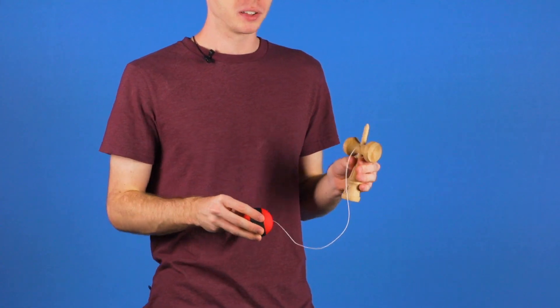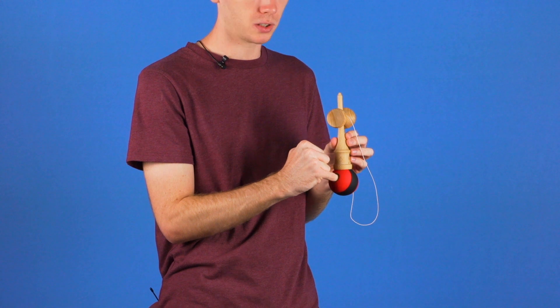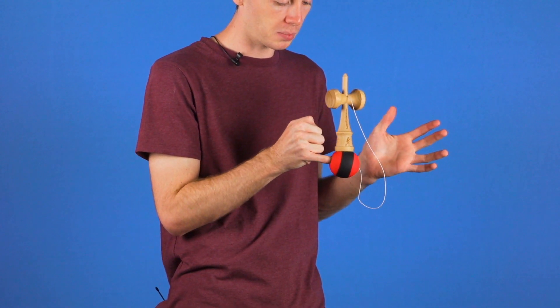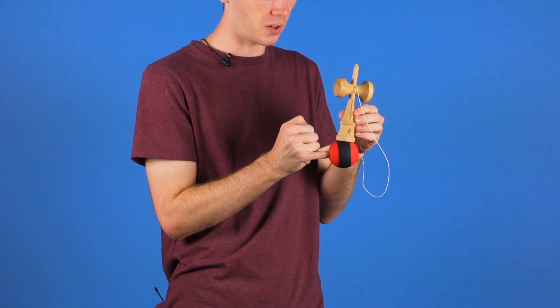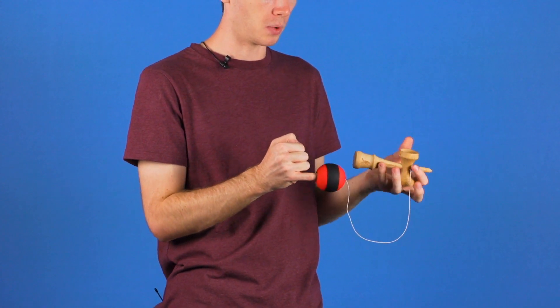When you're balancing the lighthouse, make sure that the base cup is closer to the hole of the Tama, because when you're relaxing your pinky, that's actually the balancing point for the ball. If it's farther out or more towards the middle, the lighthouse tends to fall off the Tama really easily.